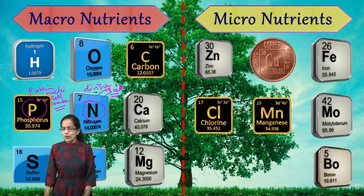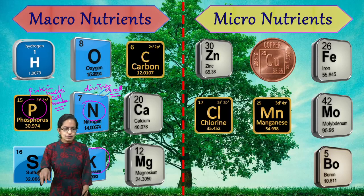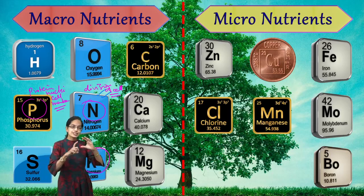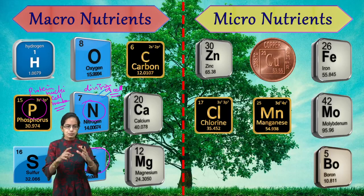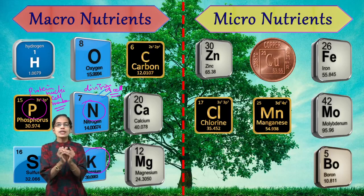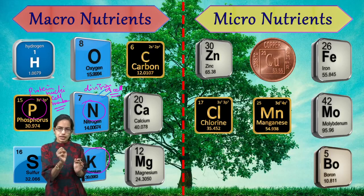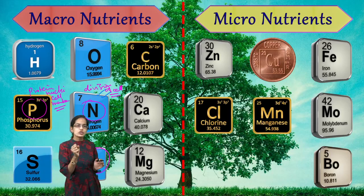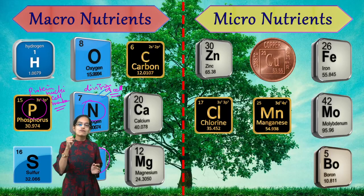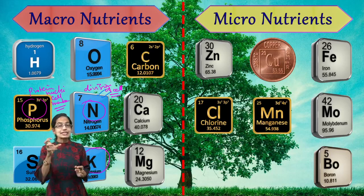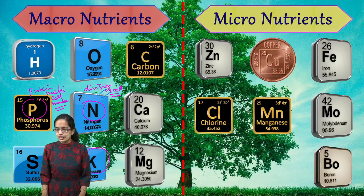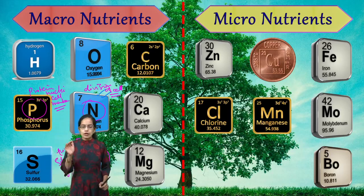The next important macronutrient is potassium. The growth of the plant is mainly governed by potassium. It is also responsible for the opening and closing of the stomata, which is required for the exchange of gases during respiration. Additionally, potassium is required for the activation of enzymes and for maintaining the turgidity of the cell. So turgidity, stomatal opening and closing, and growth are the three key functions of potassium.